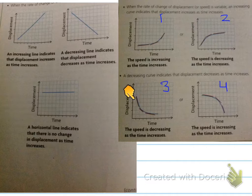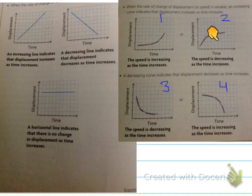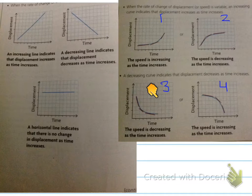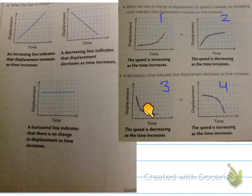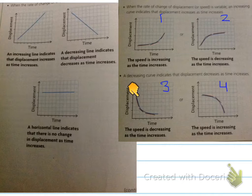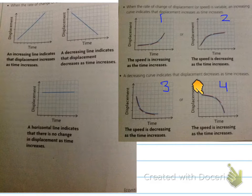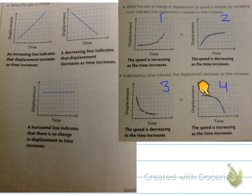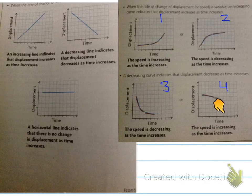Now looking at two more functions: the first two were increasing but their speeds were different. Similarly, these two functions are both decreasing, but their speeds are doing different things. In one, the tangent lines are getting closer and closer to zero, so speed is decreasing further along in time. In the other, the slopes of the tangent lines are getting larger and larger, so the speed is increasing because the lines are getting steeper and steeper.